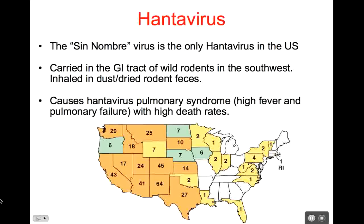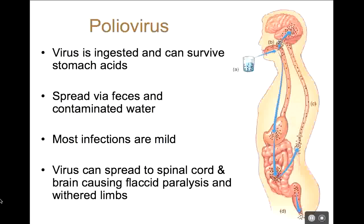Hantavirus is a really serious problem in the American Southwest, including California. Polio is another virus we used to worry about tremendously in this country, but you don't acquire it in the United States any longer. The polio virus is ingested — you get this by ingesting fecally contaminated food or water, and the polio virus can actually survive through stomach acids, which many viruses cannot.